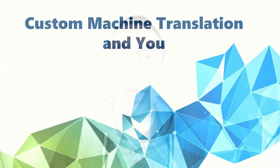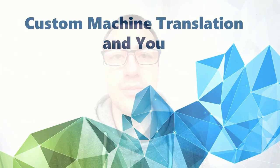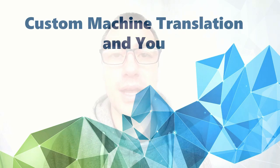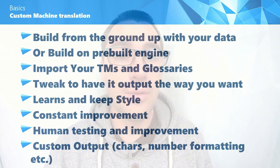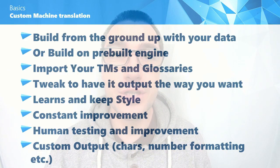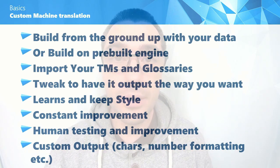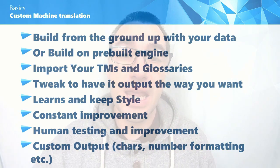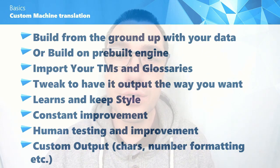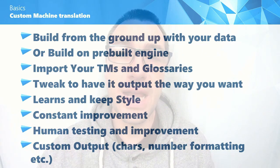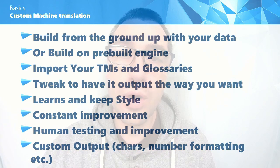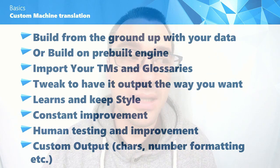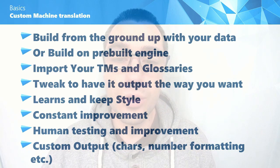Let's first run through a little bit of basics. What you can do with a custom machine translation is build it from the ground up if you wish, or you can get a pre-built engine and build on top of it. You can import your TMs and glossaries so that your machine translation will react according to these. Then you can tweak it to get the type of output that you would like.